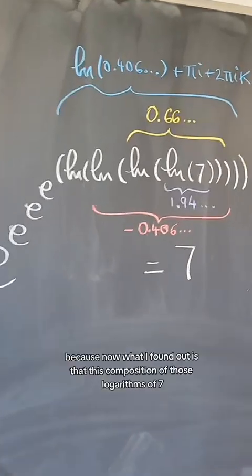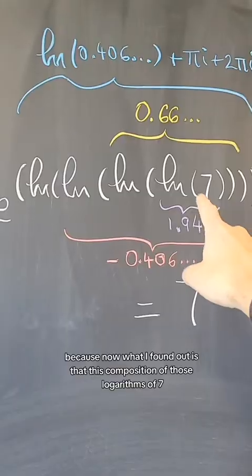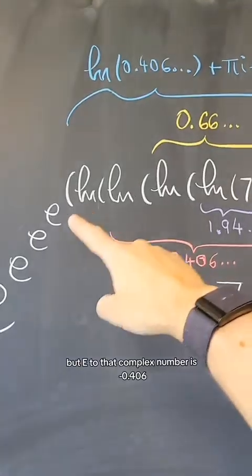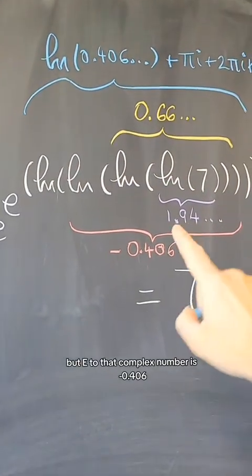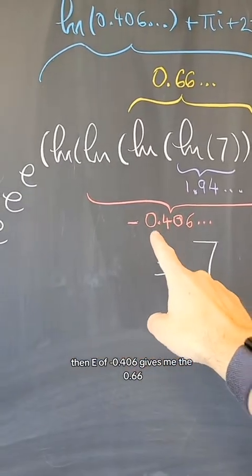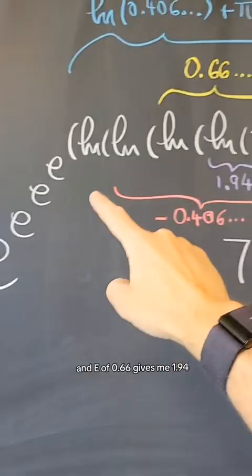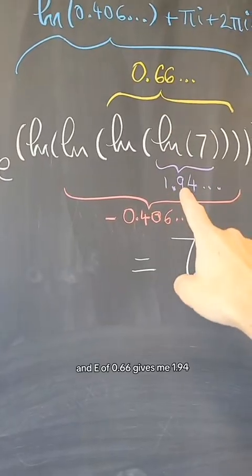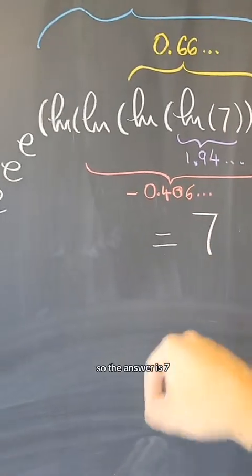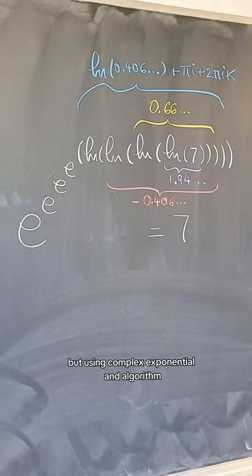But that's okay, because now what I found out is that this composition of those logarithms of 7 is actually these complex numbers. But e to that complex number is minus 0.406. Then e of minus 0.406 gives me the 0.66, and e of 0.66 gives me 1.94, and e of 1.94 gives me 7. So the answer is 7, but using complex exponential and logarithm.